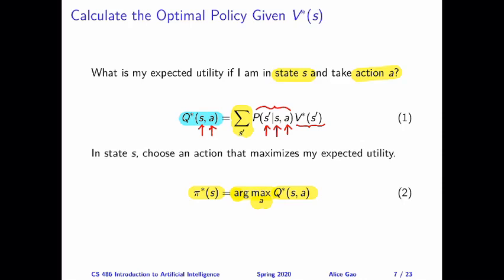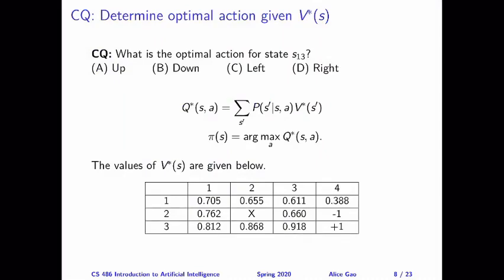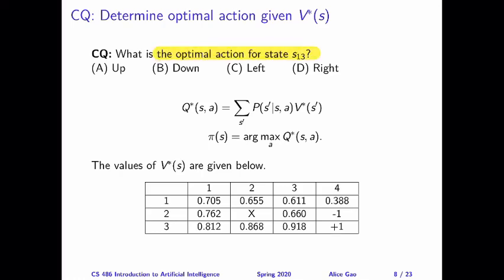Let's now try to apply these formulas in an example. Here's a question for you. Given the values of the capital Vs, the expected utility of the optimal policy, and also given the formulas that I just talked about, let's determine the optimal action for state S13. So highlighted in the grid world, this is the state with a V value of 0.611. Here's a question for you. Let's take a few minutes to try to do this calculation yourself, and then keep watching for the answer.